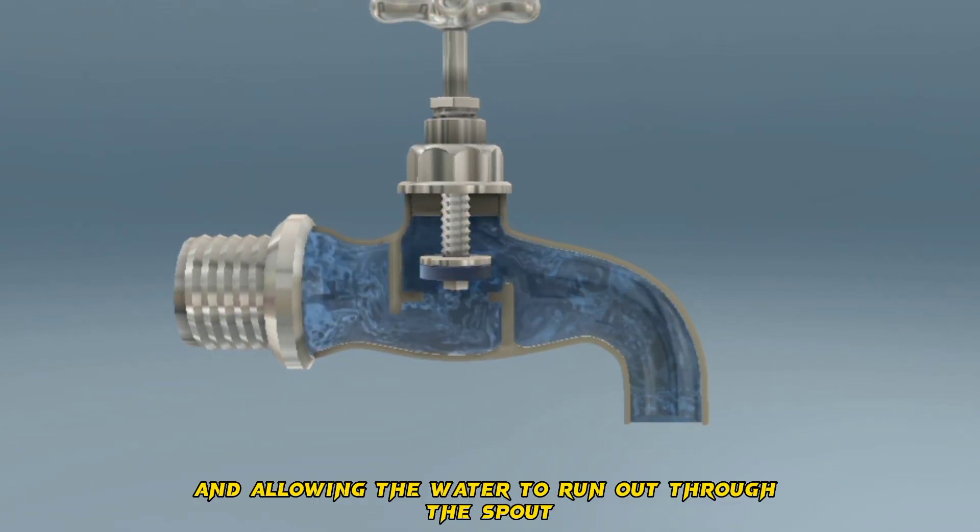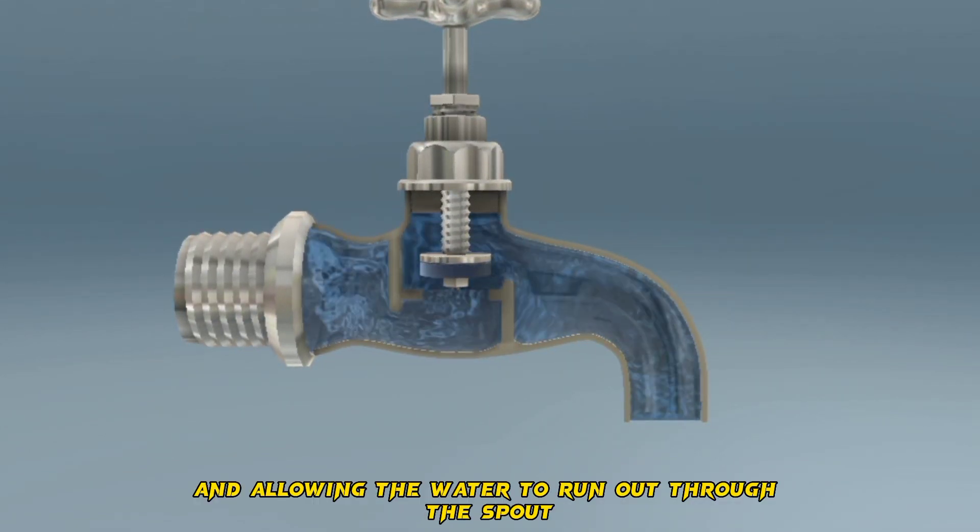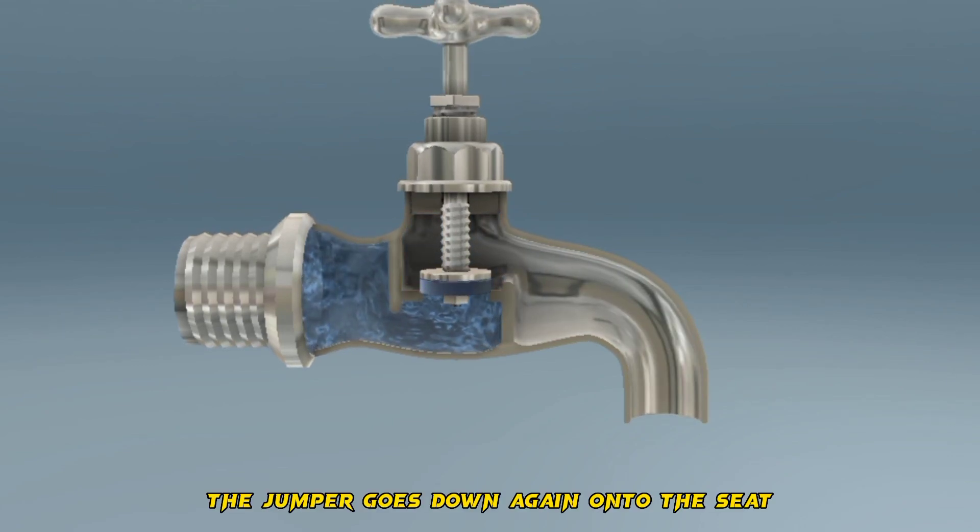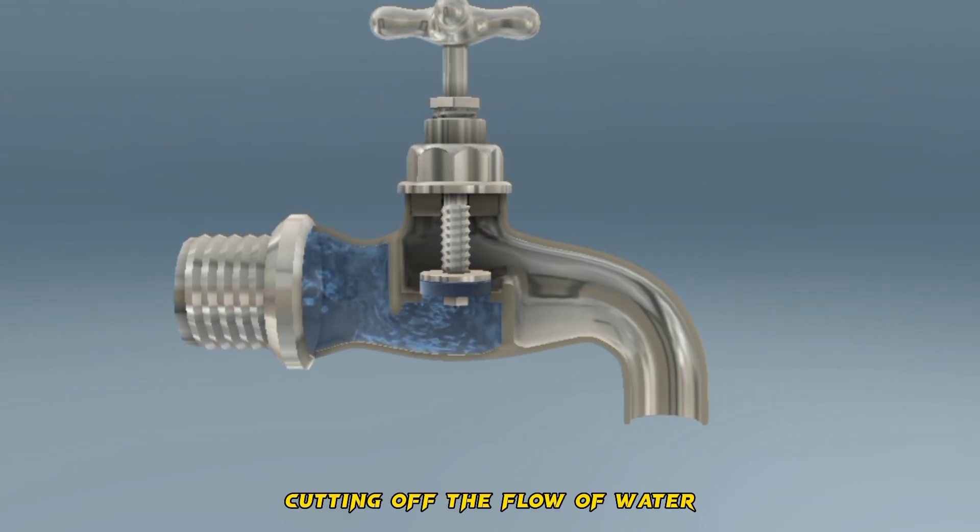lifting the jumper and allowing the water to run out through the spout. When you turn off the tap, the jumper goes down again onto the seat, cutting off the flow of water.